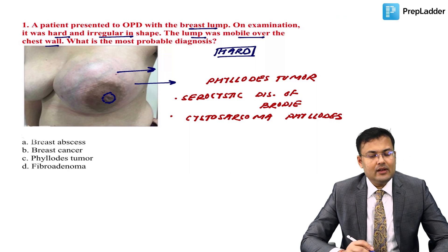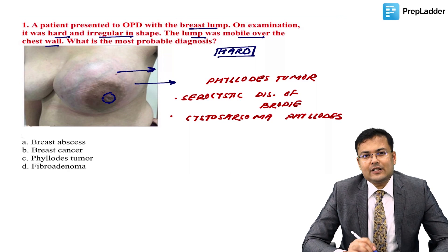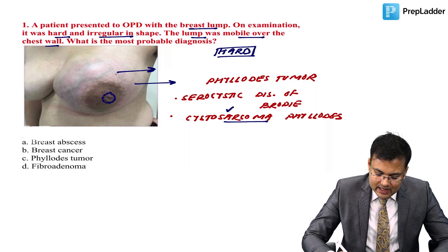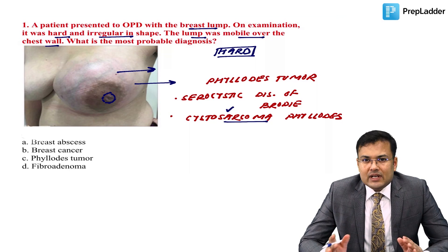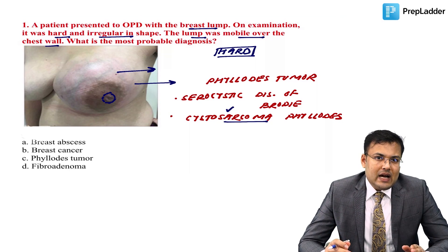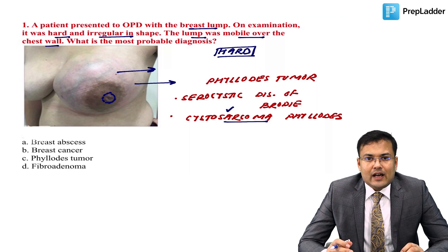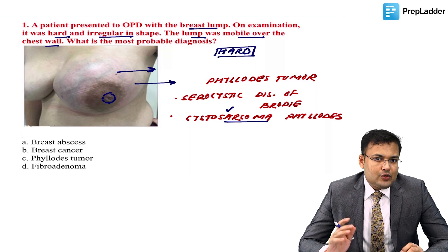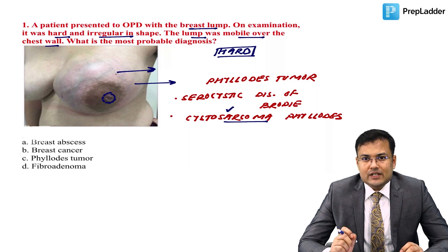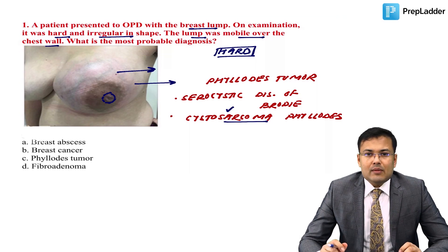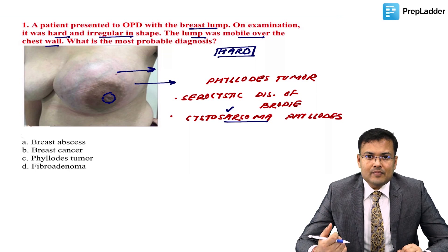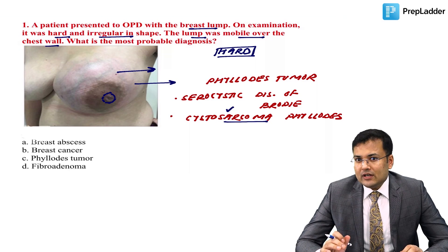It behaves like a sarcoma, hence the name cystosarcoma Phyllodes. The main difference between carcinoma and sarcoma relates to spread: in carcinoma there is lymphatic spread, and in sarcomas there is hematogenous spread. In Phyllodes tumor there is only hematogenous spread, so lymph node metastasis is not seen.